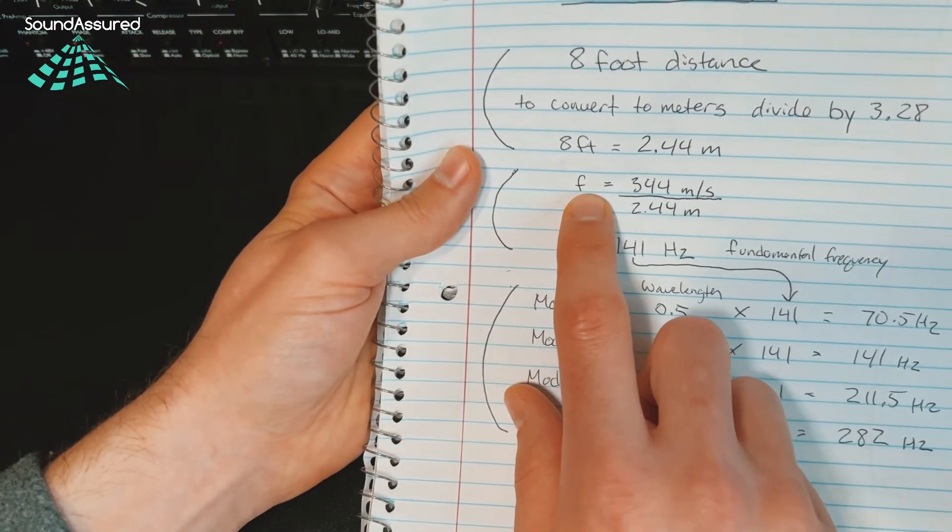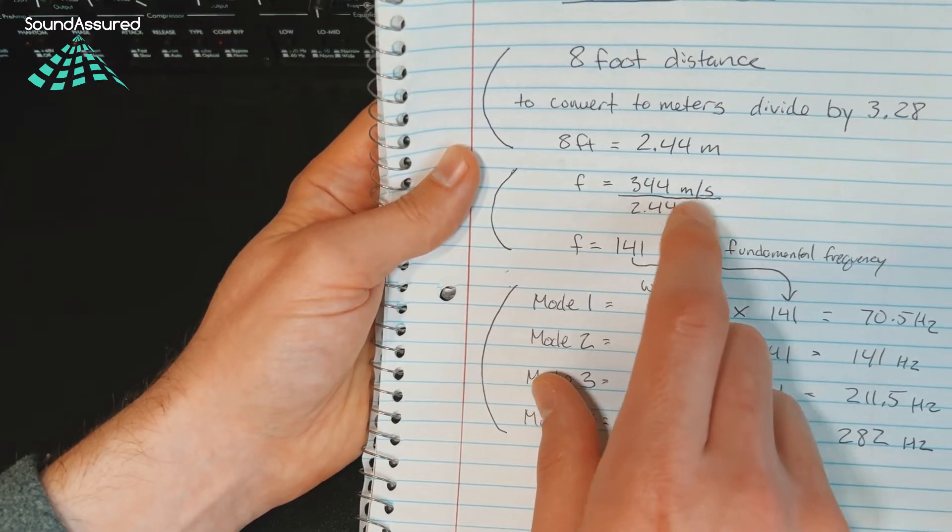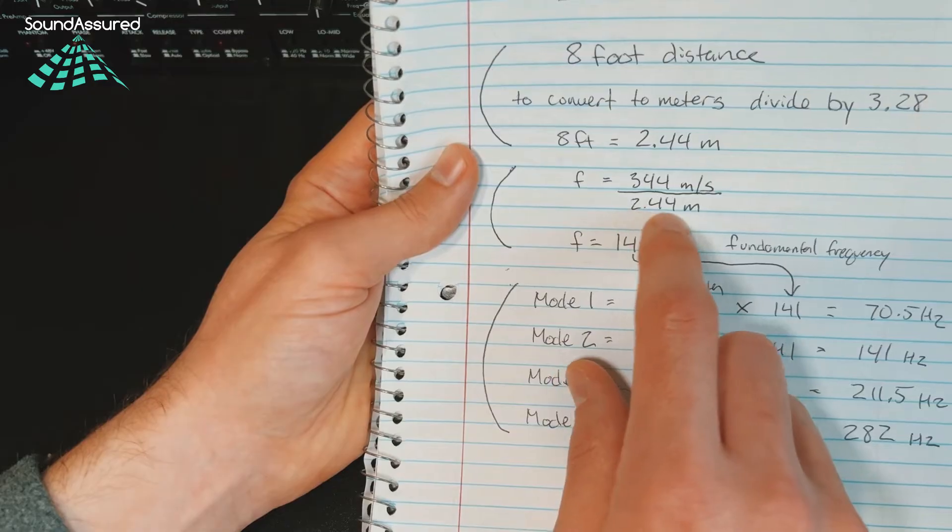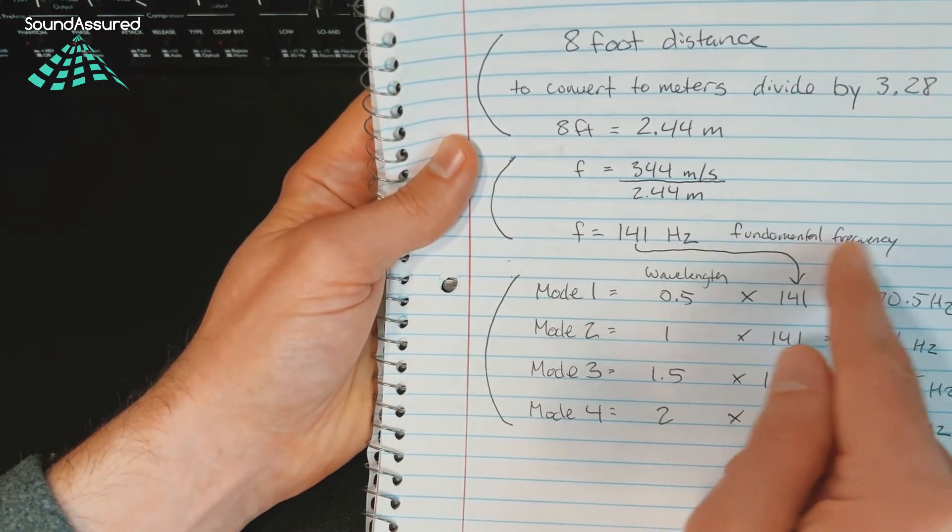Now to find the fundamental frequency, the speed of sound 344 meters per second divided by 2.44 gives you 141 Hertz as the fundamental frequency.